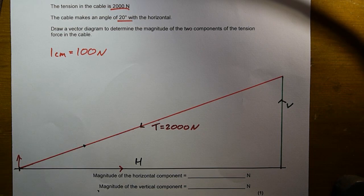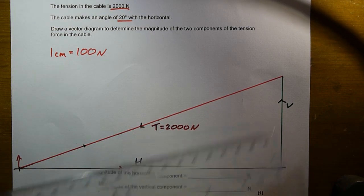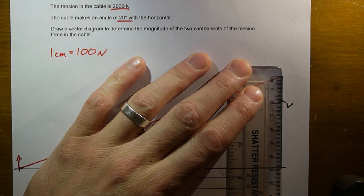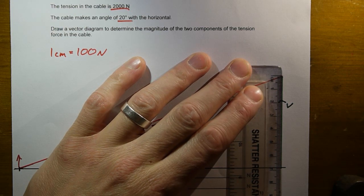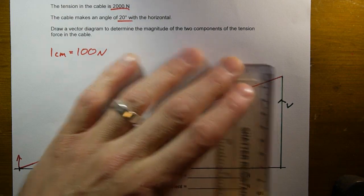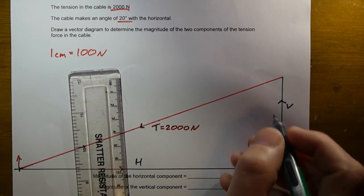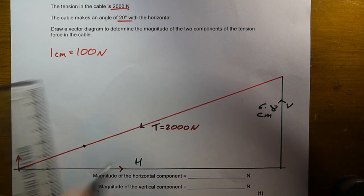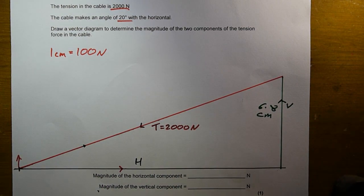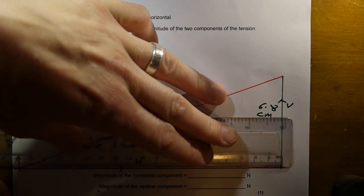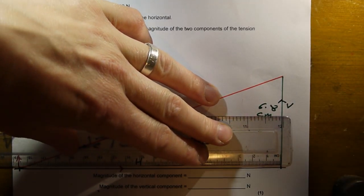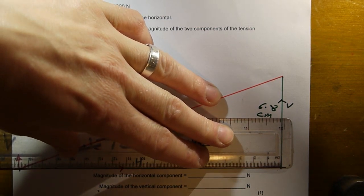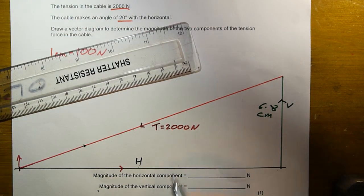And to find out their magnitude, all I need to do now is just measure them with my ruler. So my vertical component has a length of 6.8 centimetres. And my horizontal component has got a length of 18.7 centimetres.